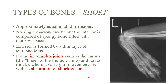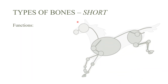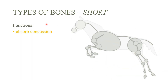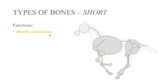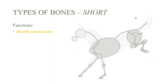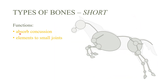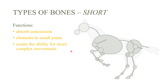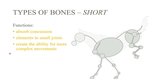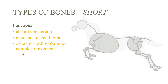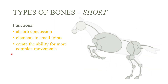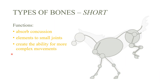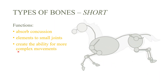Here is an X-ray of a dog's carpal joint showing short bones. Their functions include absorbing the concussion of movement, forming elements of small joints, and enabling complex movements. The smaller the bone, the easier it is to shift between positions, so short bones greatly aid complex movements.